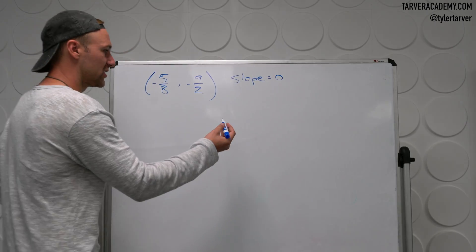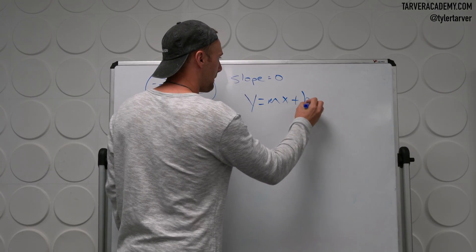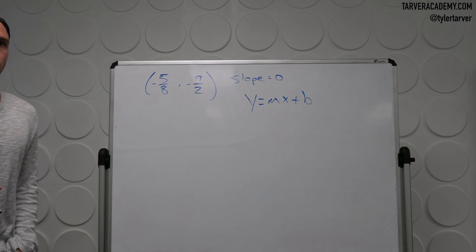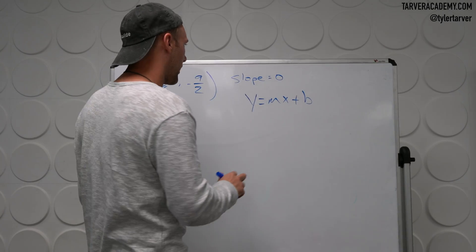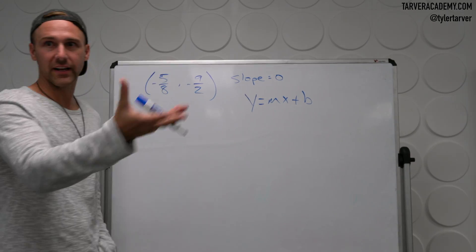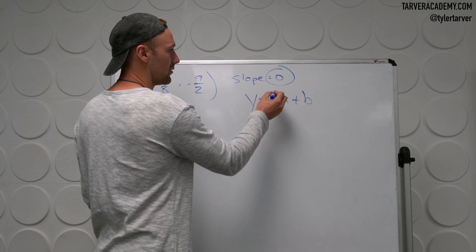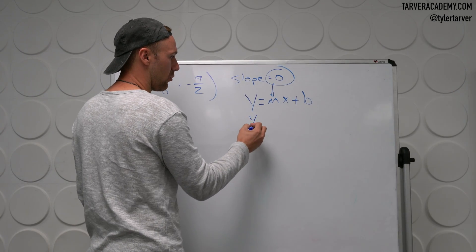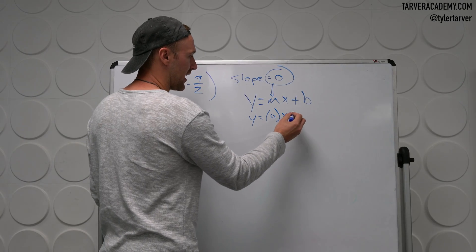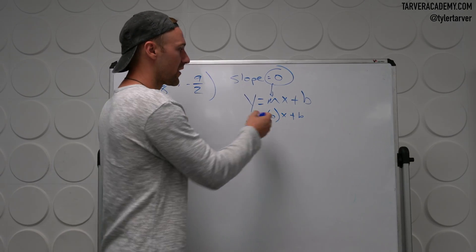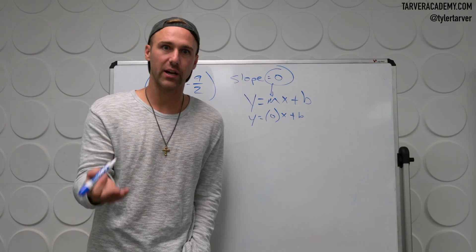Let's start with our slope-intercept form: y equals mx plus b. Plug in what you know to find what you don't know. So what do we know? Slope. We know it's zero. So I'm going to plug in y equals zero times x plus b. Right off the bat, we know something weird is happening here, because we usually don't put zero in for slope.